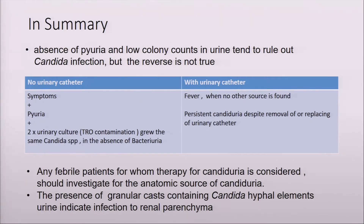In summary, the absence of pyuria and low colony counts in the urine tends to rule out candida infection, but the reverse is not true. In a patient without a urinary catheter who is symptomatic with pyuria, and two urine cultures show the same species of candida, then it may be a candida infection of the urinary tract.